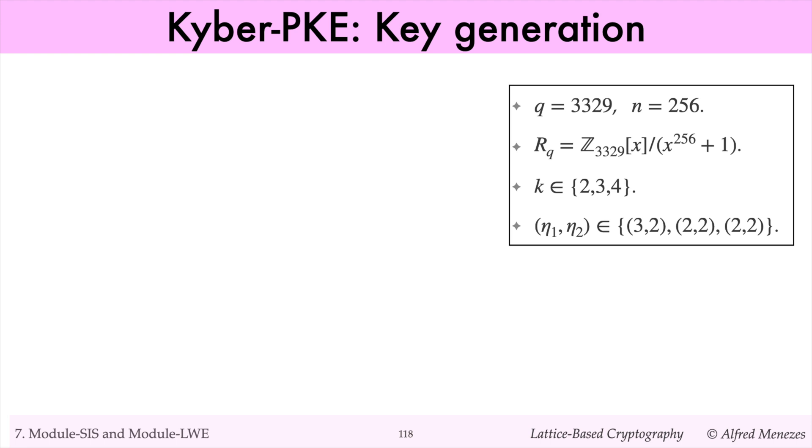To conclude this lecture, let me outline the Linder-Pikert public key encryption scheme using module LWE as the underlying problem. This is essentially the same as the public key encryption scheme Kyber. Kyber uses the parameters Q equals 3329 and N equals 256. K is either 2, 3, or 4 for different security levels. Instead of a single parameter B, Kyber uses two parameters, eta1 and eta2.